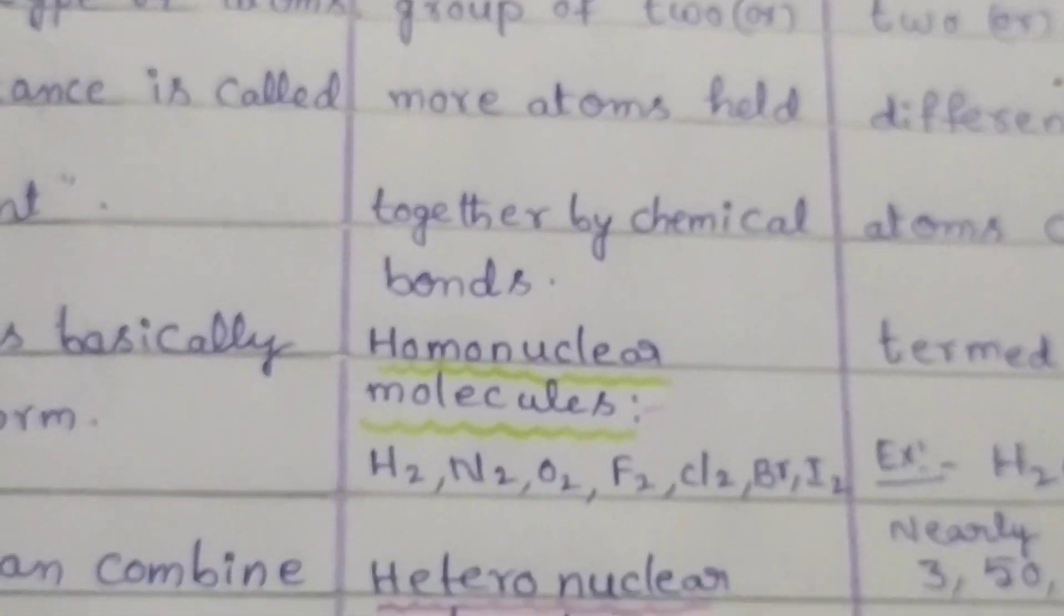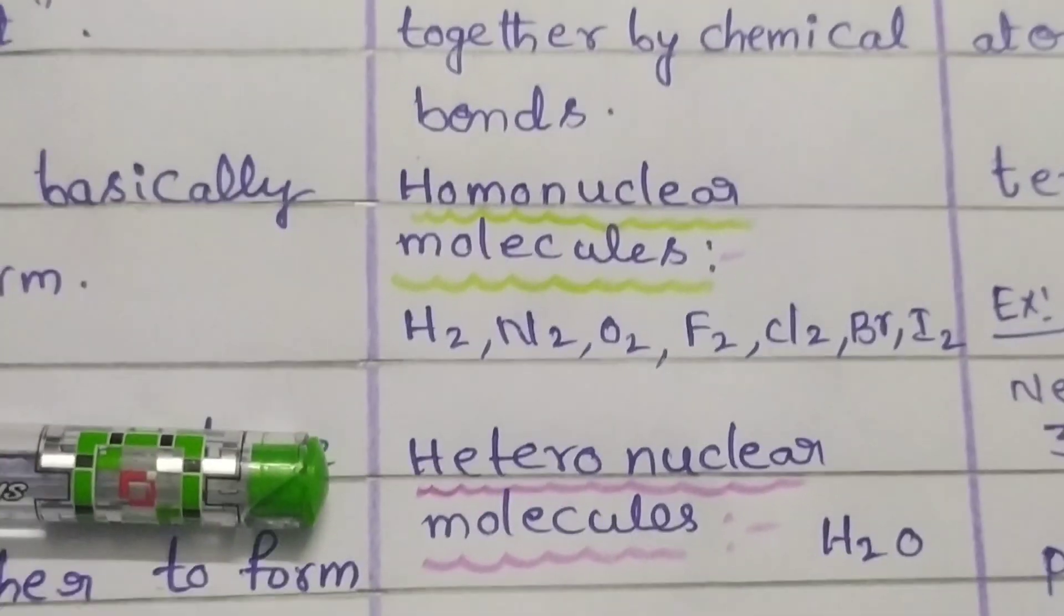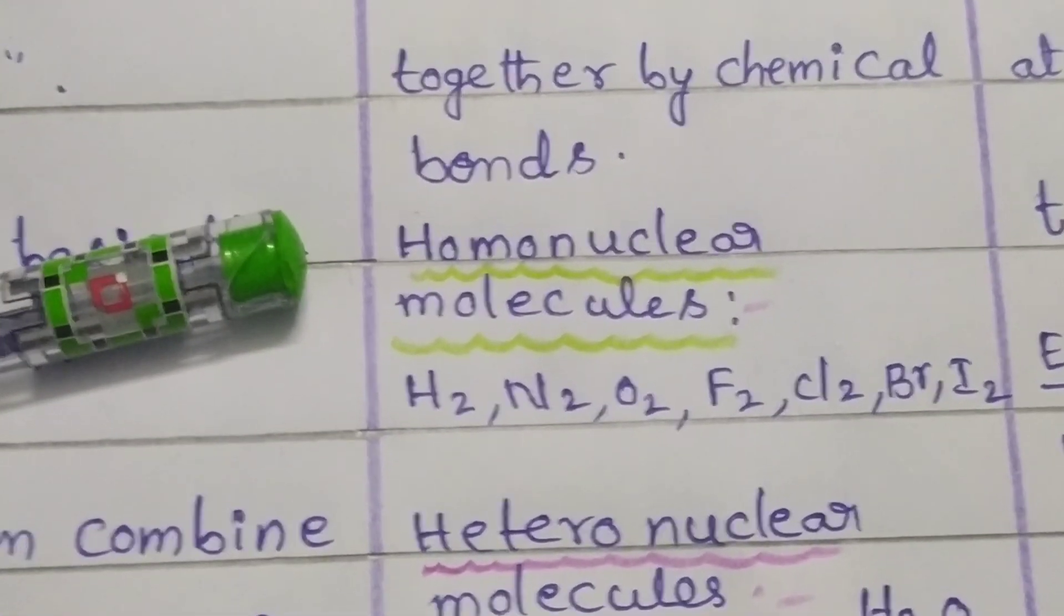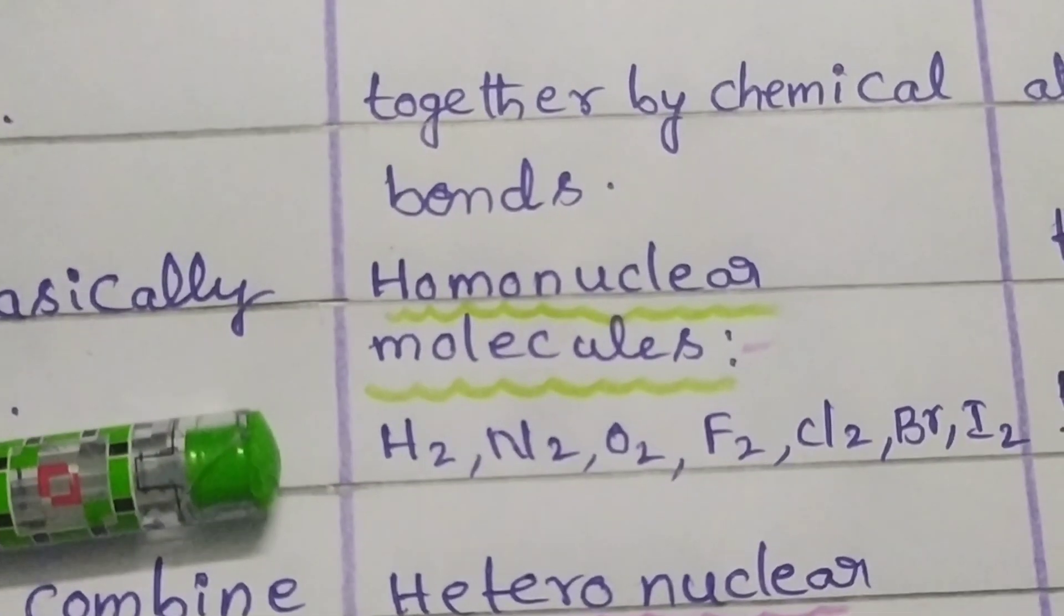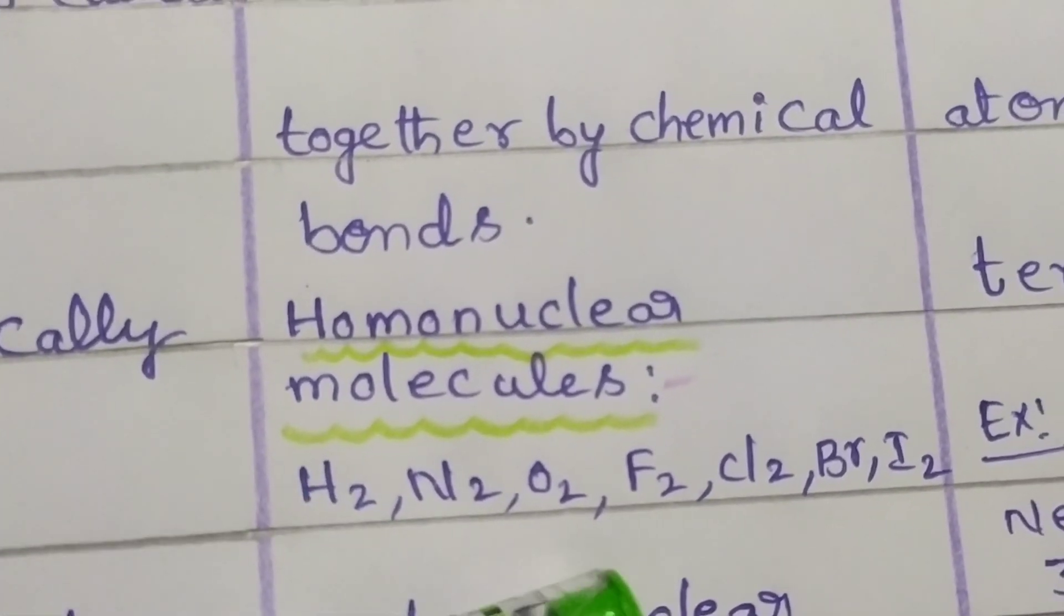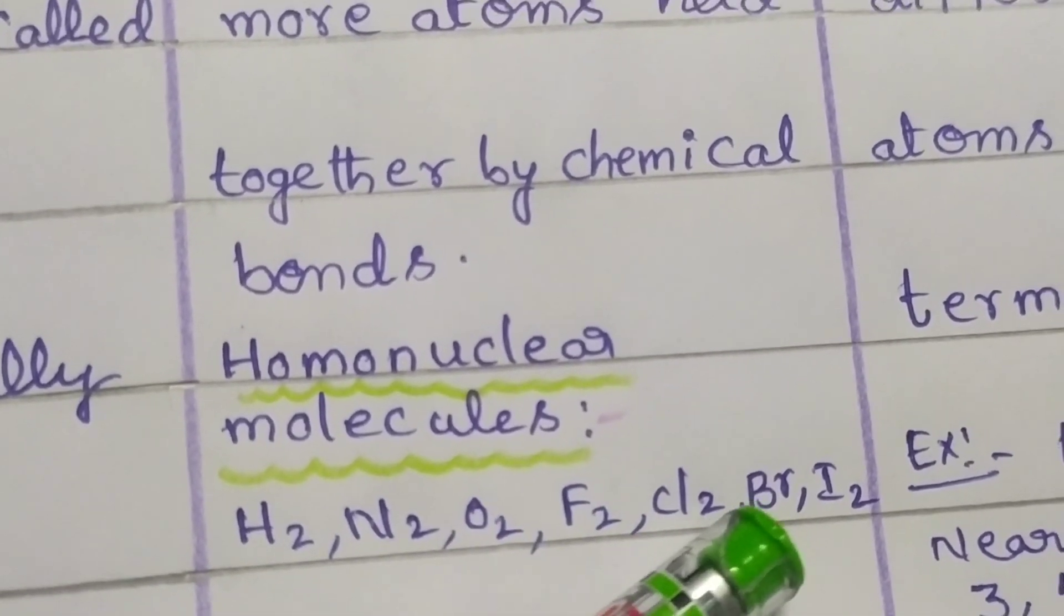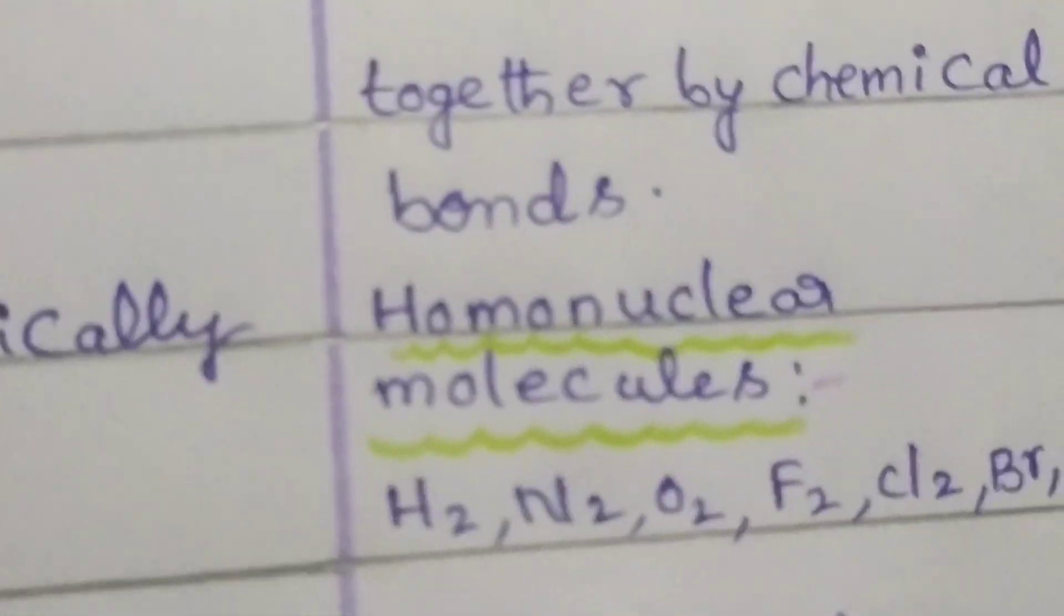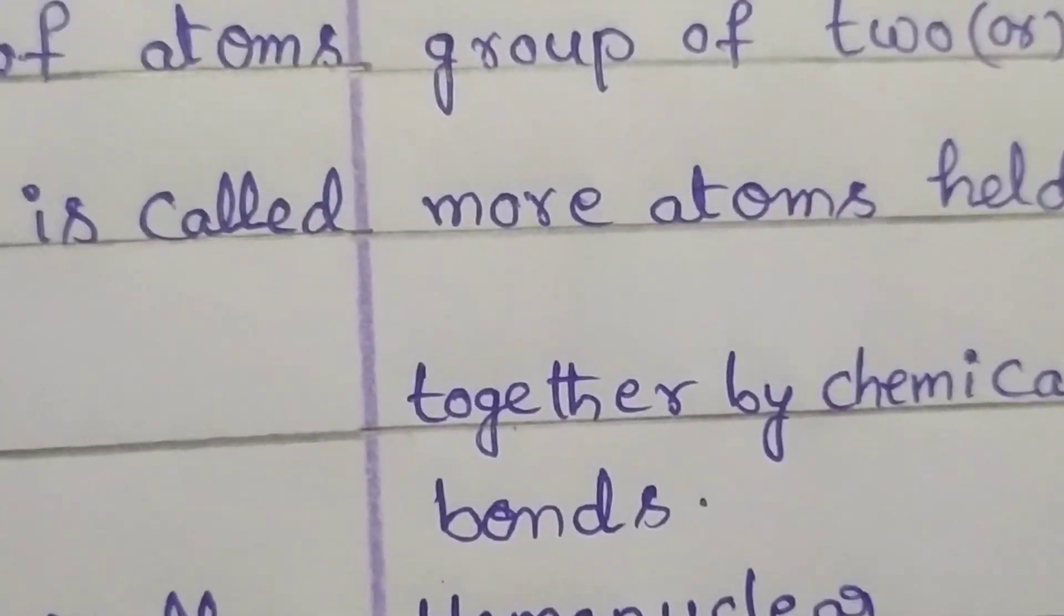These molecules are again classified into two types: homonuclear molecules and heteronuclear molecules. Homonuclear molecules means these molecules are formed with similar type of elements combined together. For example, hydrogen, nitrogen, oxygen, fluorine, chlorine, bromine Br2, and iodine. These are examples for homonuclear molecules.